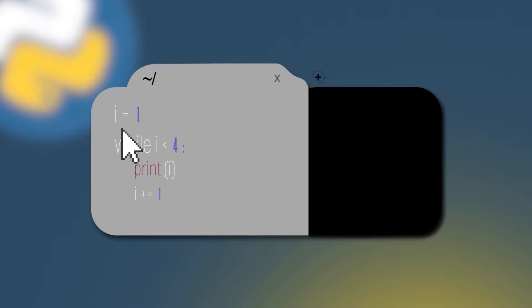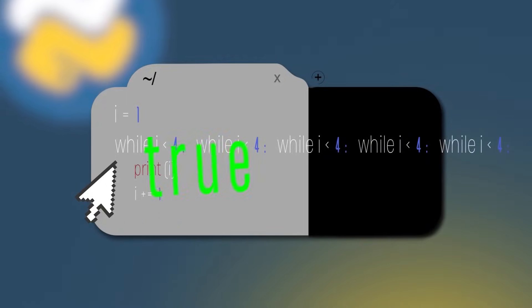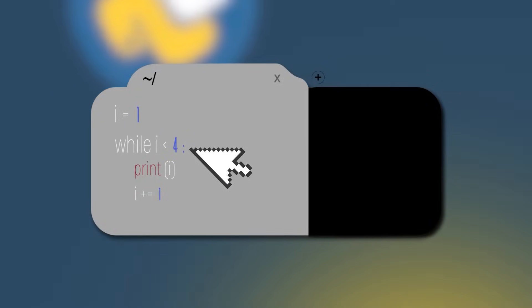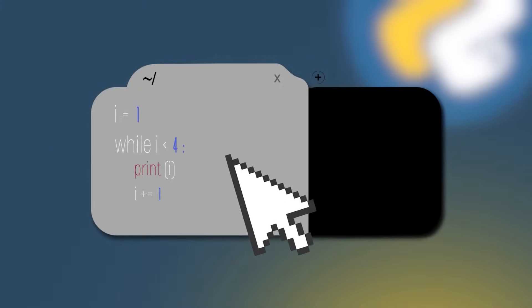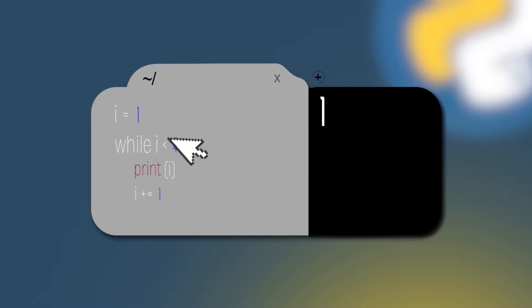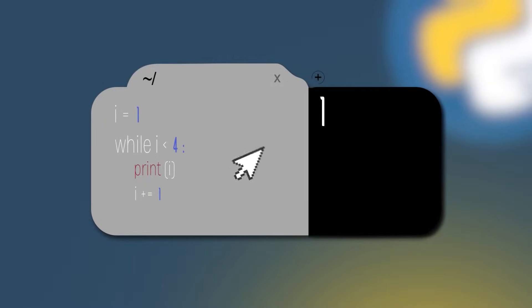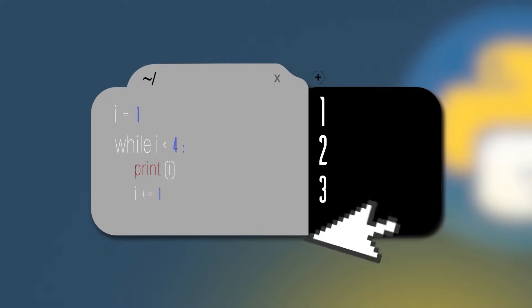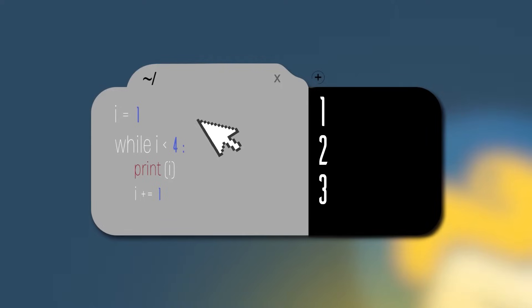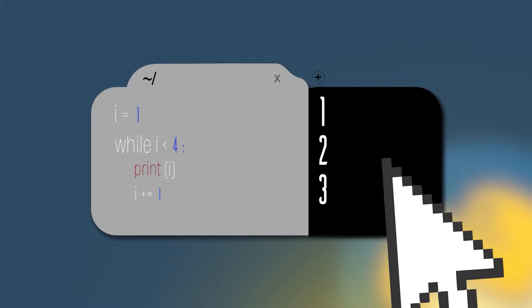Let's understand with an example. We set variable i equal to 1, then create a while loop that runs while i is less than 4. First iteration: i is 1, less than 4, so we stay in the loop, print 1, and increment i by 1. Next: i is 2, less than 4, print 2, increment. Next: i is 3, less than 4, print 3, increment. Then i is 4, the condition is no longer true, so we exit the loop and we're done.